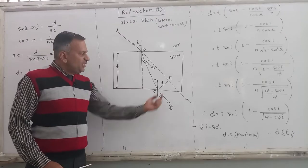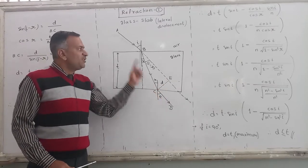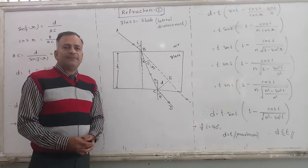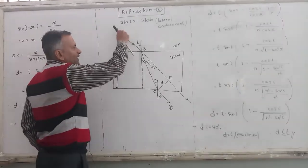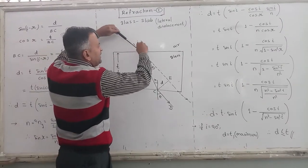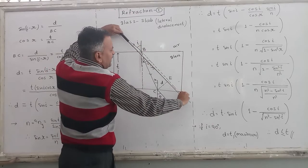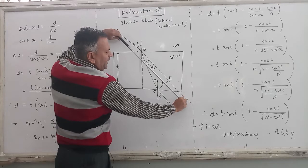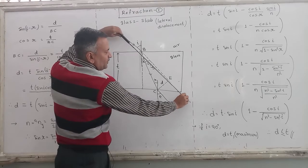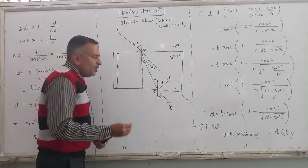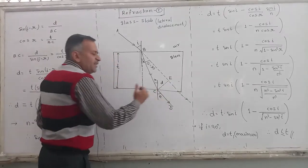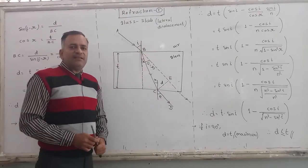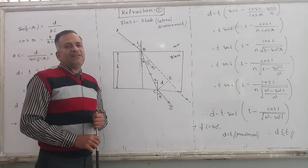The shift in the path of incident ray that is caused by this glass slab - the ray would have gone like this, but due to presence of glass slab, the ray is shifted like this. So this distance of shifting of the ray is known as lateral displacement or parallel displacement.